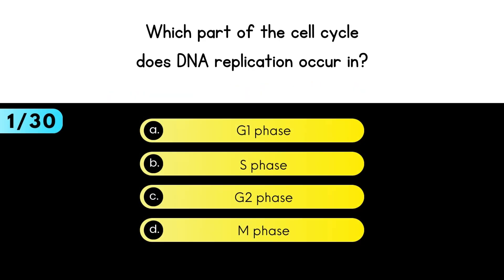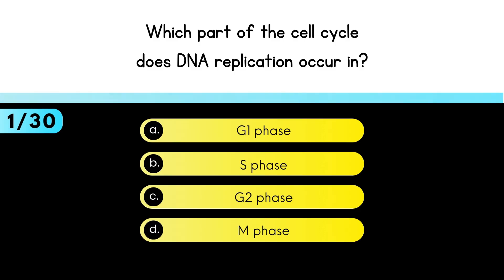Which part of the cell cycle does DNA replication occur in? The answer is S phase.